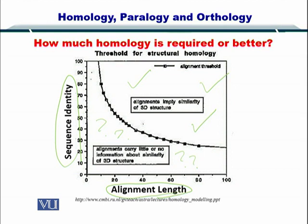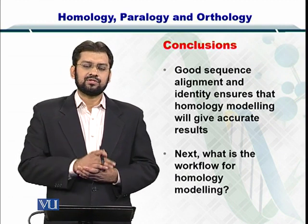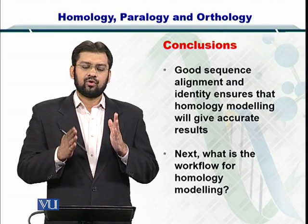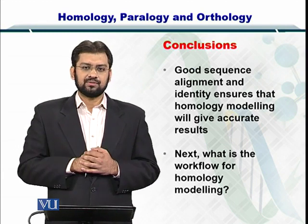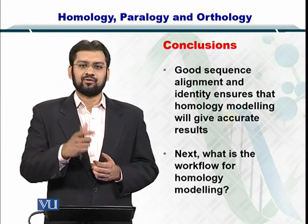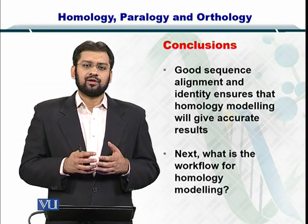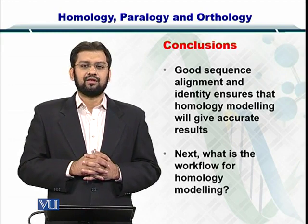Before proceeding with homology modeling, you look at the alignment length and the sequence identity. If they are high enough, you go ahead with homology modeling. But if they are low, we will have to employ some other strategy, such as ab initio modeling or fold recognition, which is also called threading. In conclusion, before proceeding with homology modeling, we need good alignment length and good sequence identity. If both scores are high, we can proceed; otherwise, other techniques must be employed to predict protein structure. The flow for homology modeling, given high identity and alignment, will be considered in the next module.